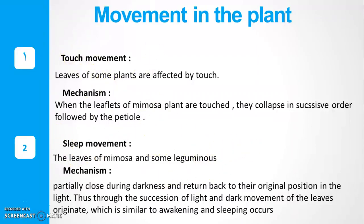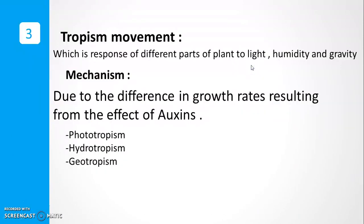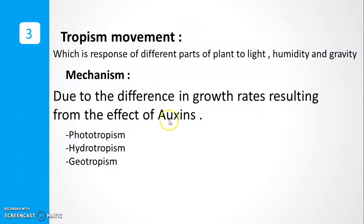Sleep movement can be found in the leaves of mimosa plants and some legumes. Next is tropic movement, which is very important because it responds to different stimuli in different parts of the plant. The three stimuli you must remember are: light, humidity, and gravity. The mechanism of tropic movement involves organs that make a difference in growth rates — it is the differential growth of organs. The types of tropism include phototropism, hydrotropism, and geotropism.